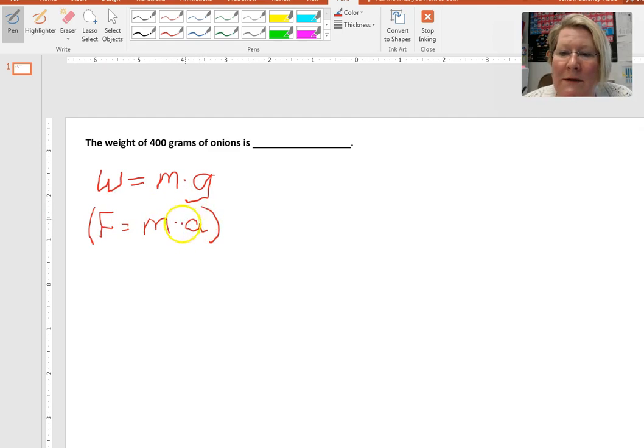As well, acceleration we're going to use acceleration due to gravity in order to calculate the weight of an object. So let's go ahead and start here. They're giving us 400 grams as our starting mass.